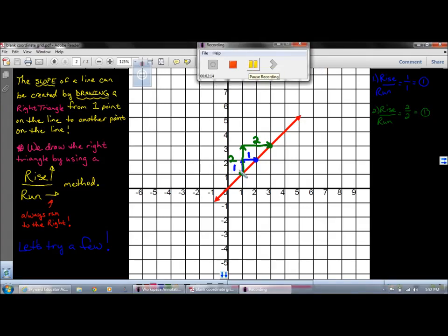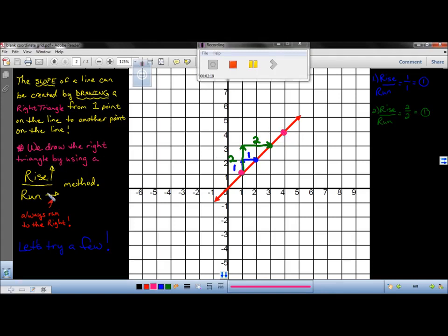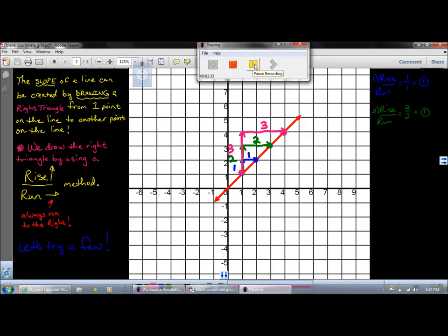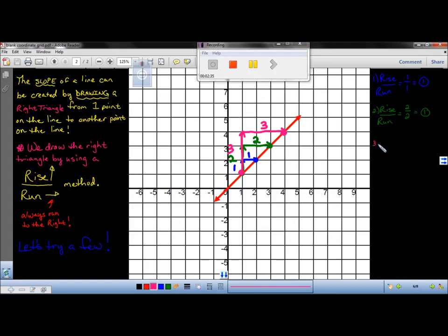What if we tried two other points? Let's look at the pink points that we have on the line here. Same thing. We're going to rise up 1, 2, 3. And we're going to run 1, 2, 3. We've created our pink right triangle. Write down our method: rise over run. We rose 3 and we ran to the right 3. 3 over 3 is the same as 2 over 2, which is the same as 1 over 1, which is 1.